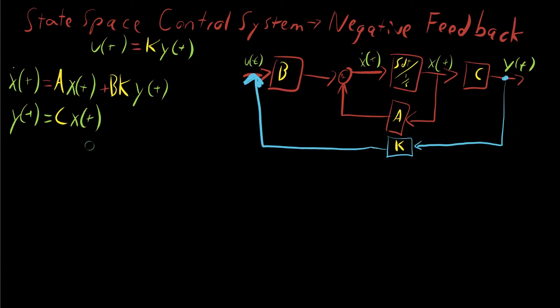Because of this loop, because of this loop property, the control system, the transfer function of the control system becomes changed.